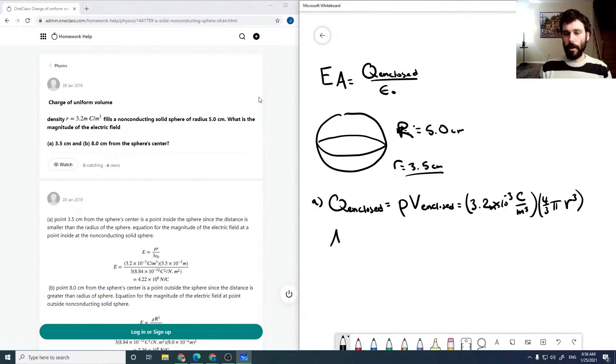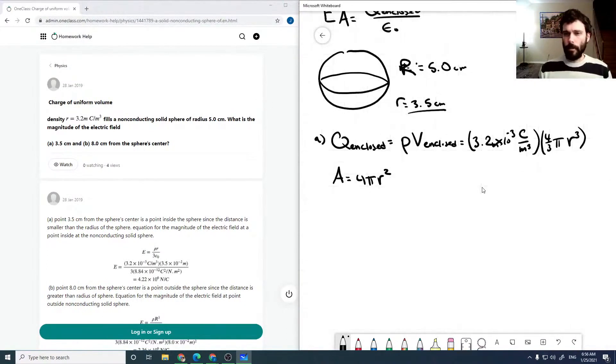Our area in all cases will be 4 pi r squared. So we can say that E times 4 pi r squared equals 3.2 times 10 to the minus 3 coulombs per meter cubed over epsilon naught.